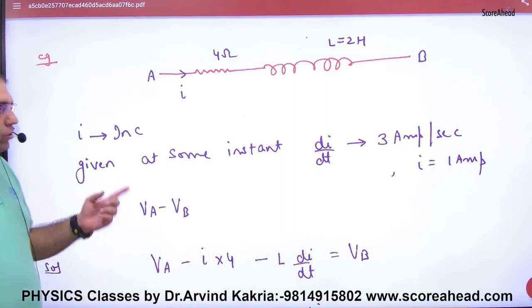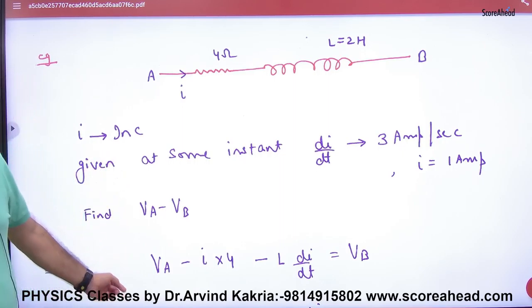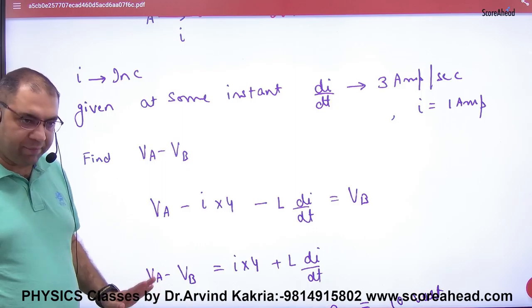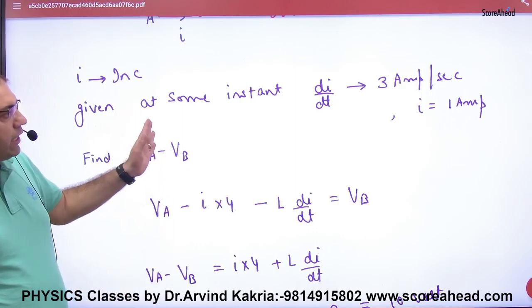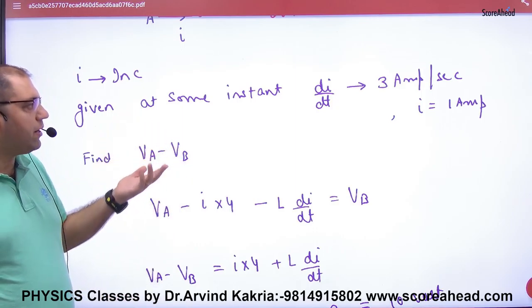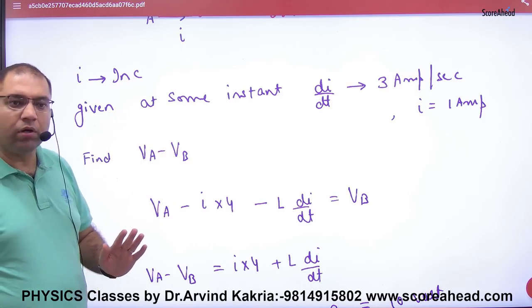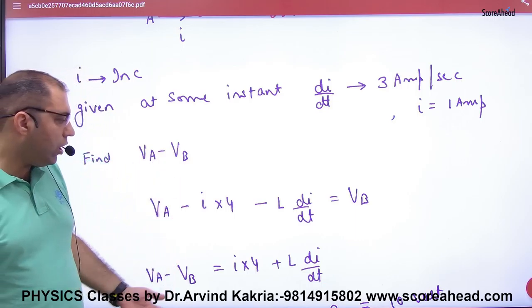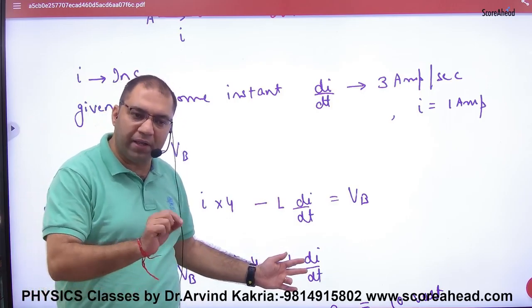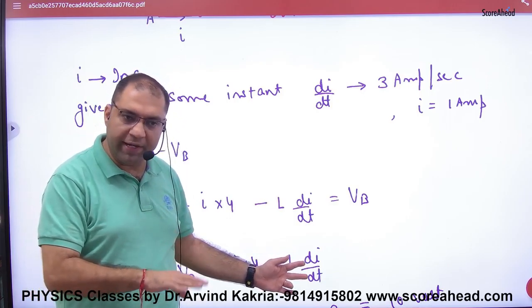Now two things: current value is instant 1 ampere, what will we put here? 1 ampere. di by dt value, 3 ampere per second. If current is increasing, then you will put in this formula di by dt plus 3.